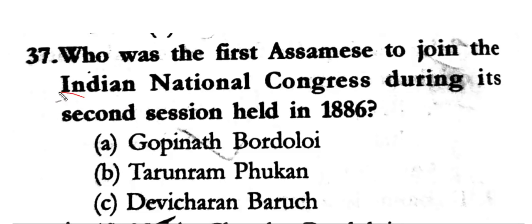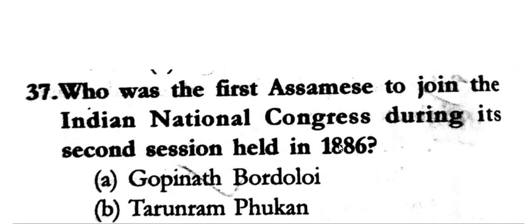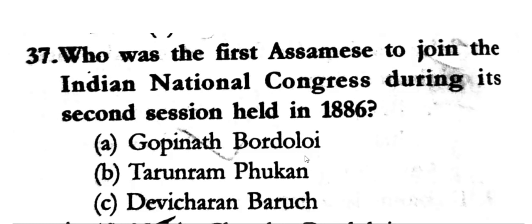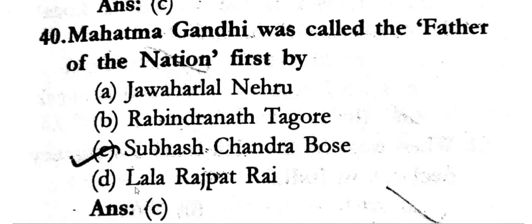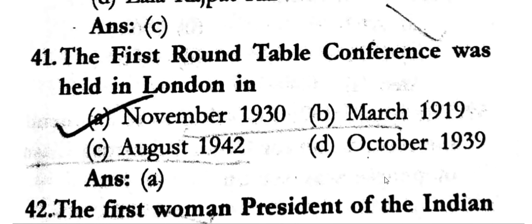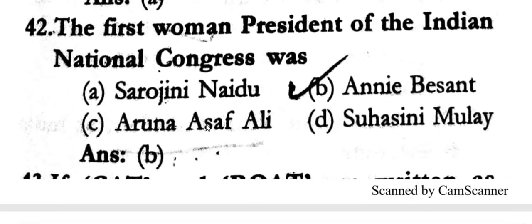Who was the first Assamese to join the Indian National Congress during its second session held in 1886? Next: the first President of the Muslim League. The first Roundtable Conference was held in London in November 1930. Annie Besant was the first woman president of the Indian National Congress.